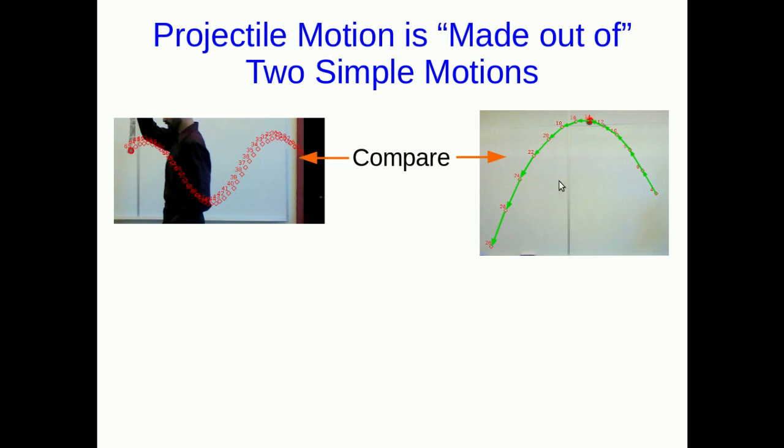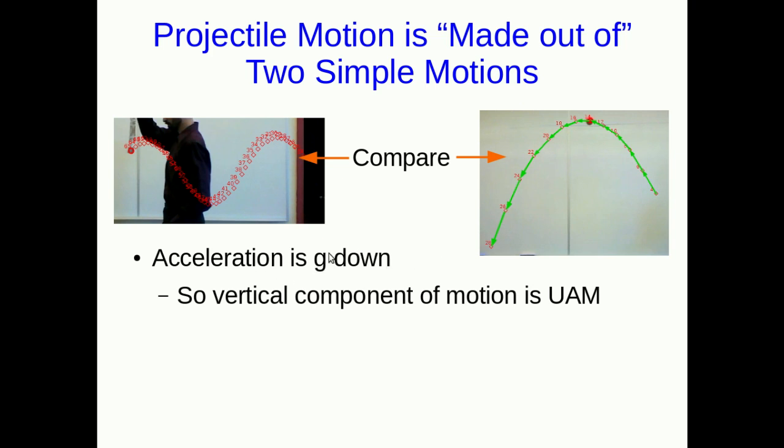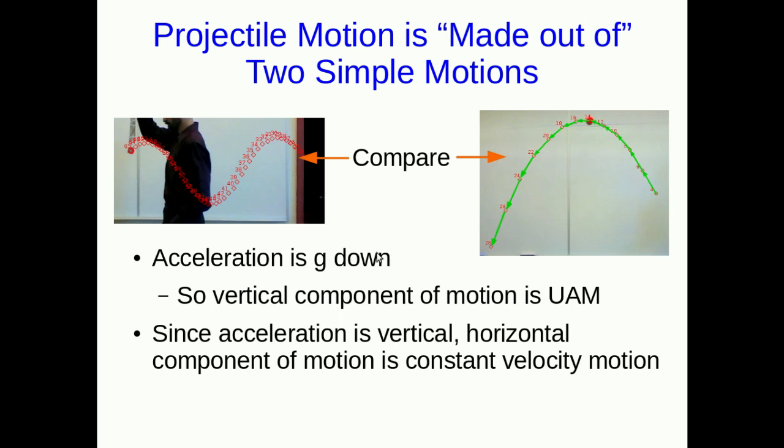Similarly you can think of projectile motion as a combination of two motions. The acceleration is down and it's g, which we met when talking about freefall. Projectile motion is just another example of freefall when it isn't along a straight line. The vertical component is uniformly accelerated motion because there's constant acceleration. But since g is straight down, there is no horizontal component to the acceleration vector, meaning the horizontal component of velocity is constant. We have two motions combined: uniformly accelerated motion vertically and constant velocity motion horizontally.